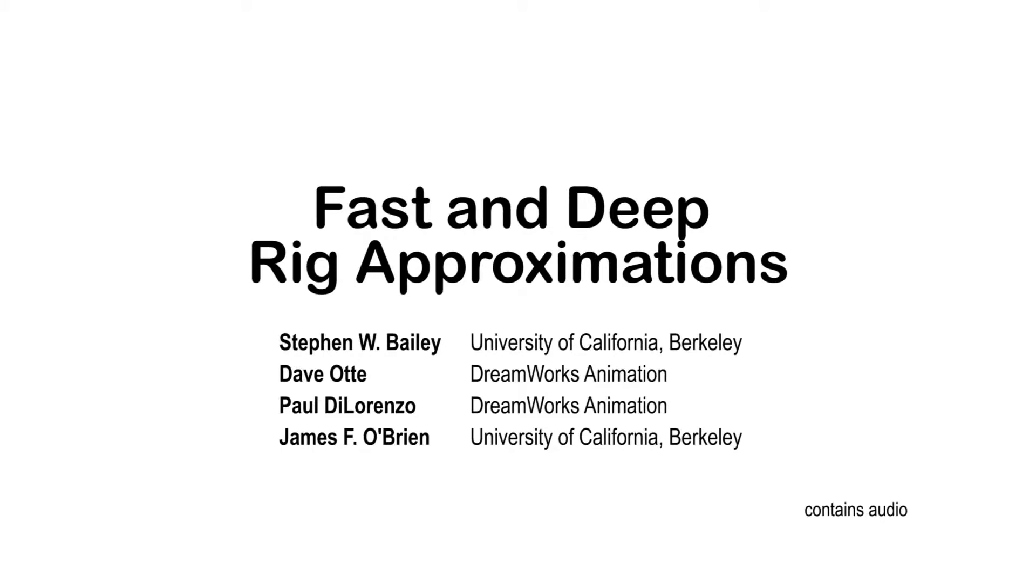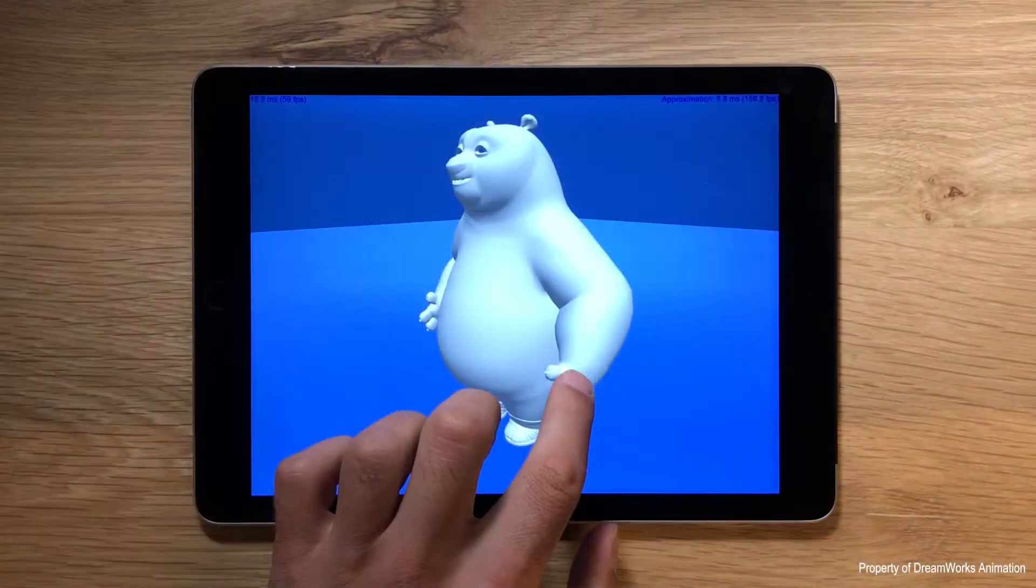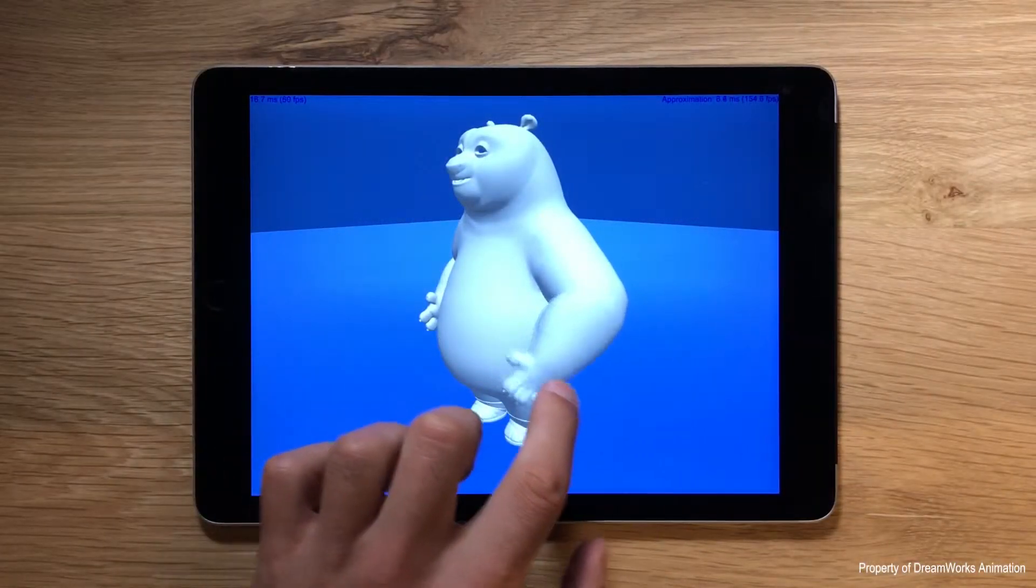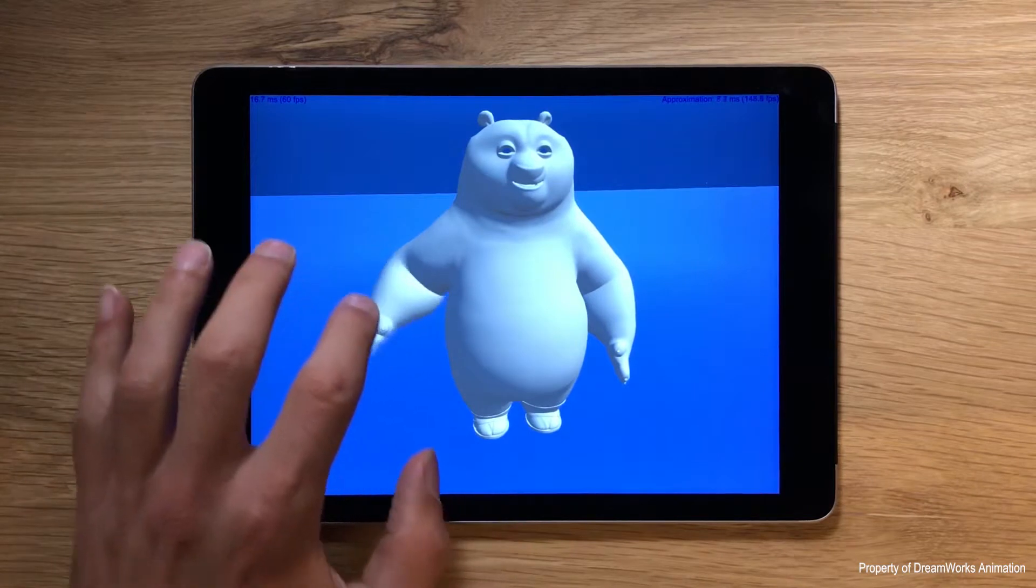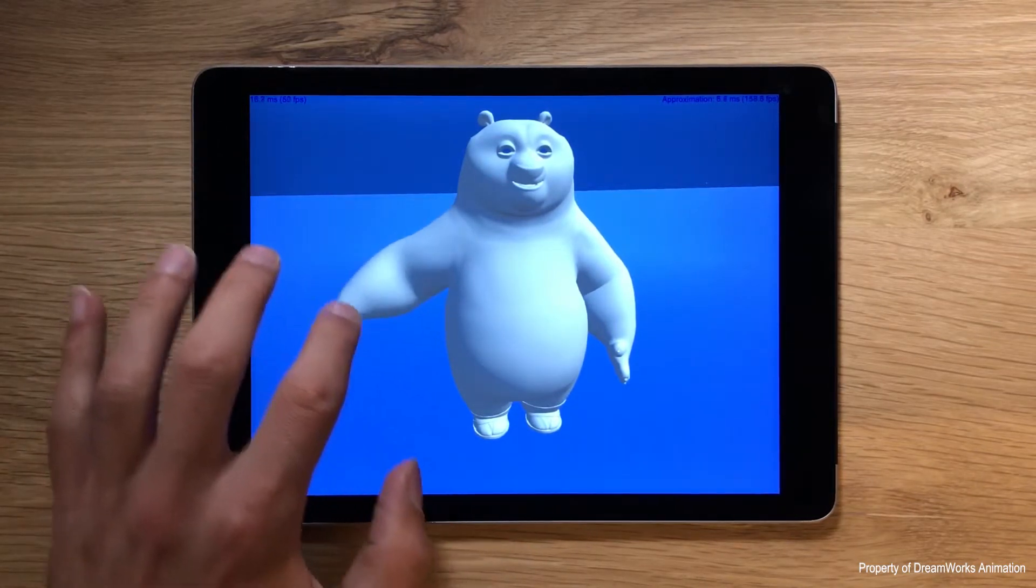We present a method to approximate mesh deformations of feature film quality character rigs in real time. Here we show our algorithm approximating the mesh deformations of Po from Kung Fu Panda 3 on an iPad.